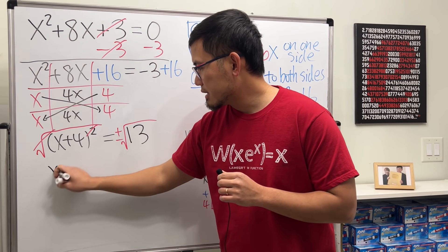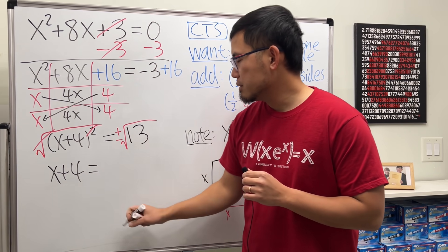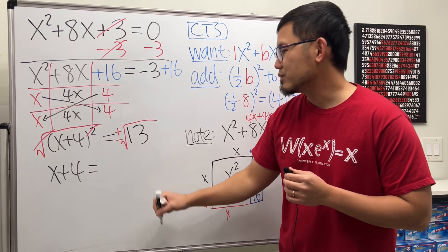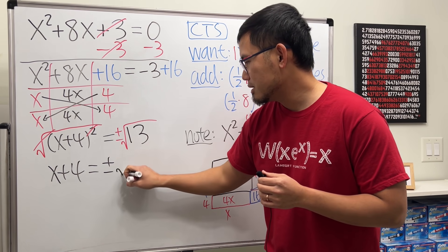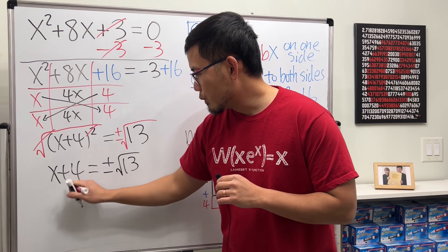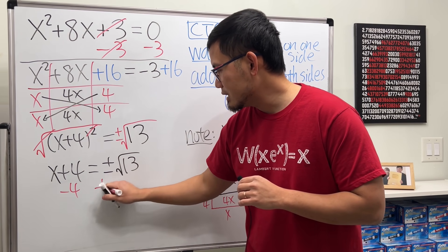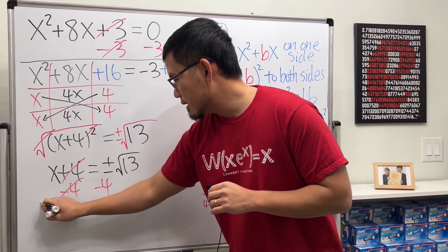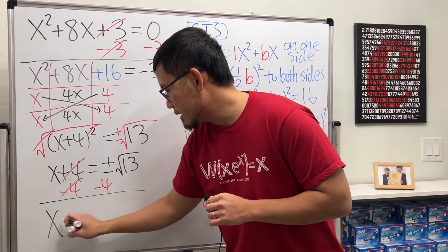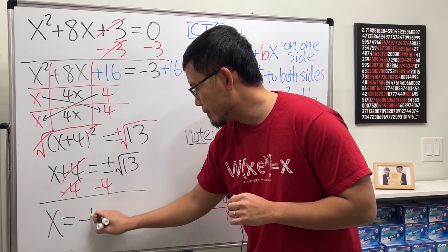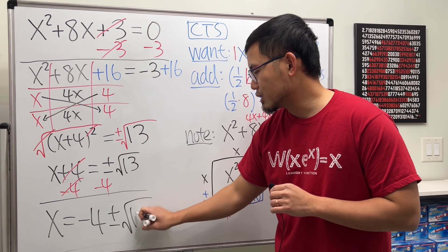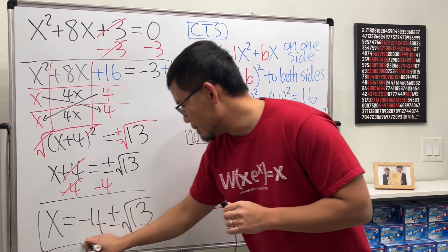So here we have x plus 4 equals square root of 13. Let's just leave it because we cannot break it down, so just leave it plus minus square root of 13. And to get x by itself we will just have to minus 4 on both sides. Cancel this, cannot combine this and that, so finally we'll just leave it x equals this right here: negative 4 and then write down plus or minus and then square root of 13. And ladies and gentlemen, this is the answer to the quadratic equation.